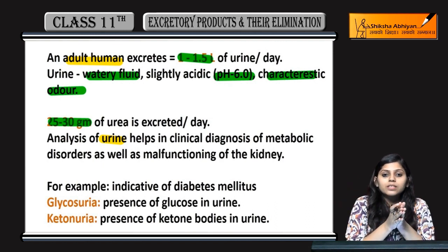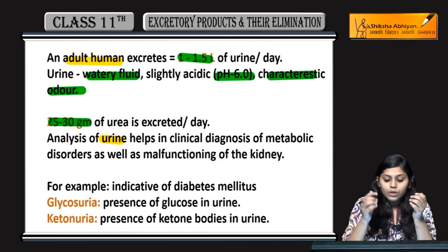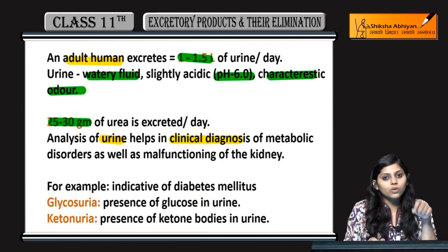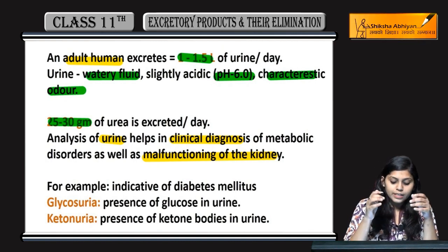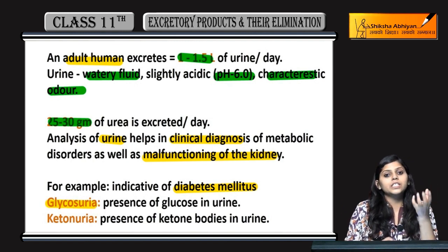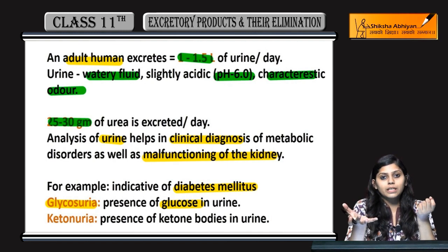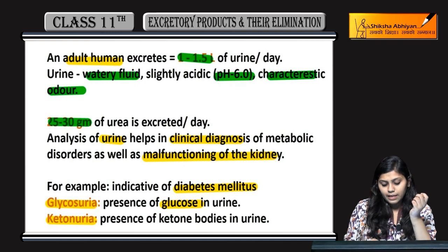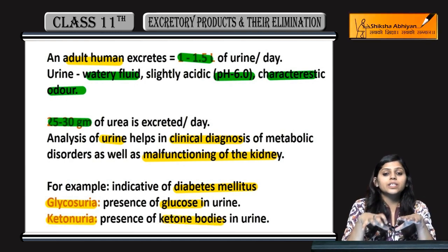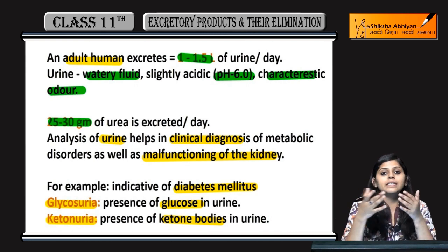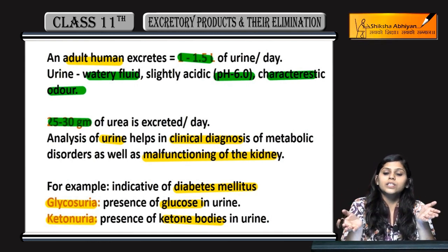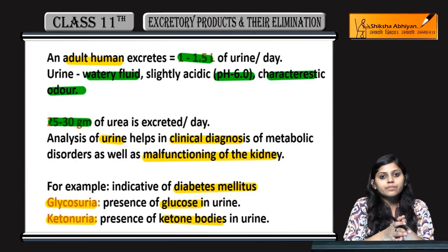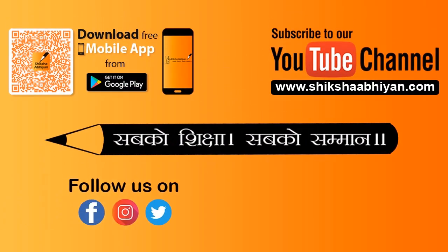Analysis of urine helps in clinical diagnosis. Bhoot saare treatments mein aapko diagnosis ke liye urine test ke liye kaha jata hai. Metabolic disorder ho jay ya malfunctioning ho kidney ki — for example, if diabetes mellitus hai then glycosuria test ho sakta hai jis mein urine mein glucose ki concentration milegi. Ketonuria ho sakta hai agar ketone bodies miley urine mein. So clinically bhi urine helpful hai taki diagnosis ho sake kidney ki malfunctioning ki ya kisi metabolic disorder ki.